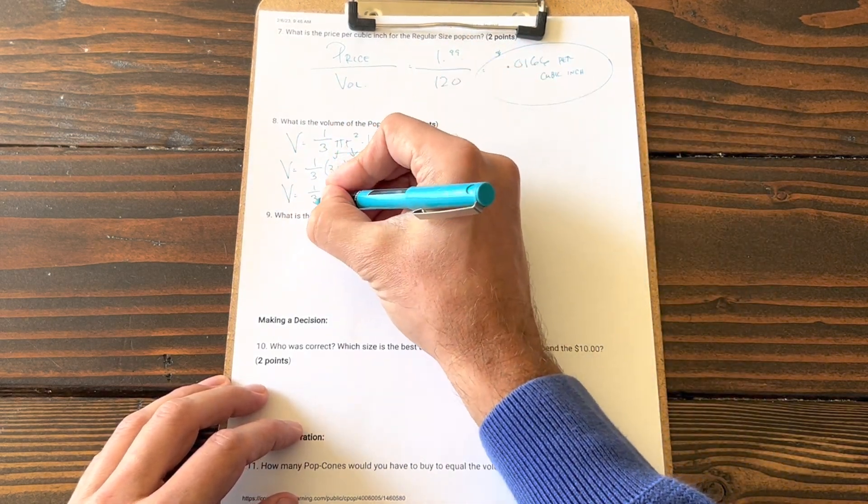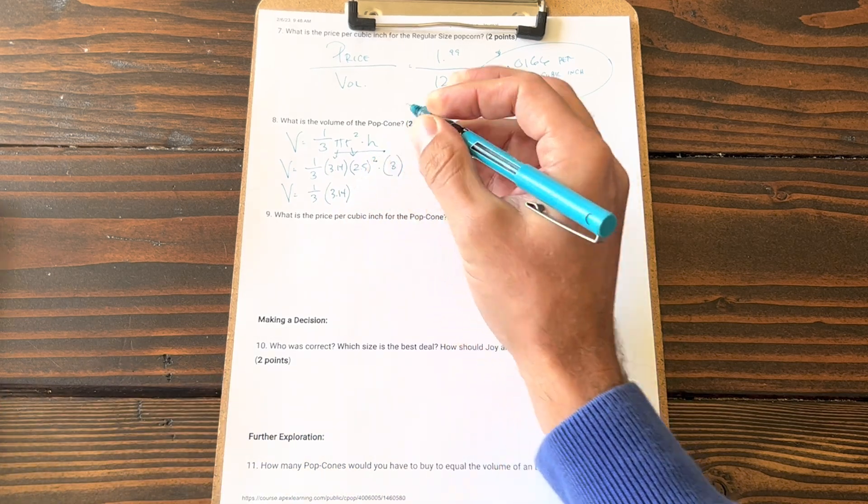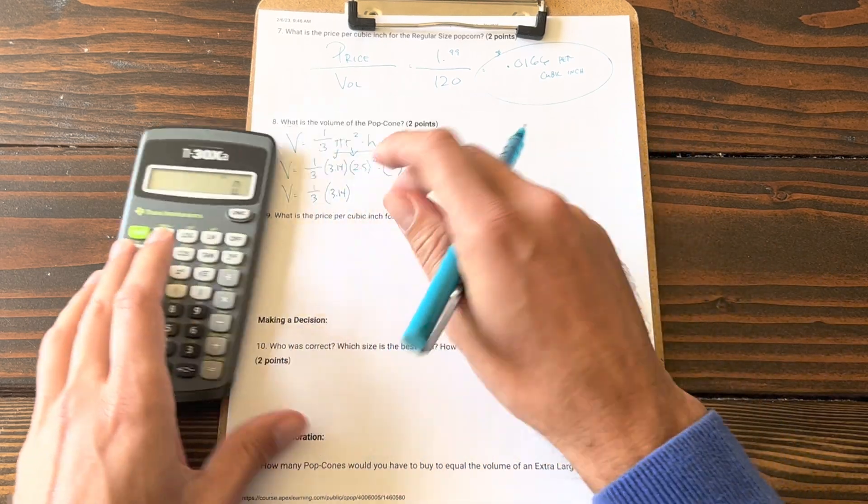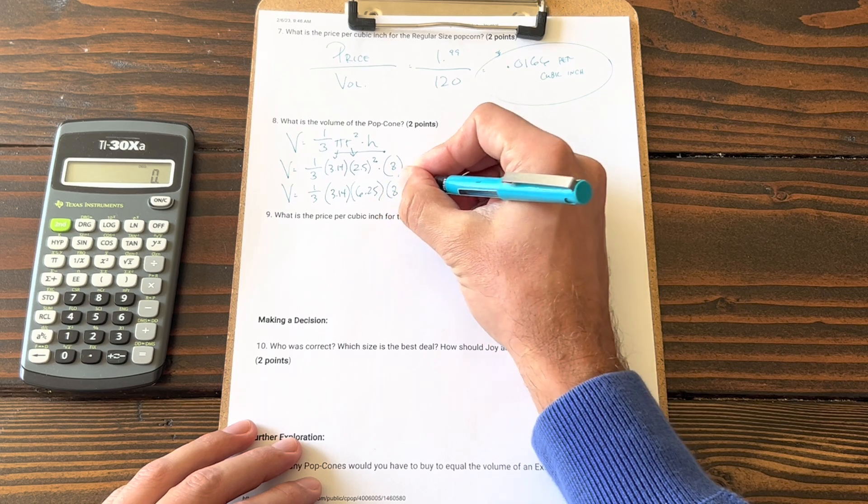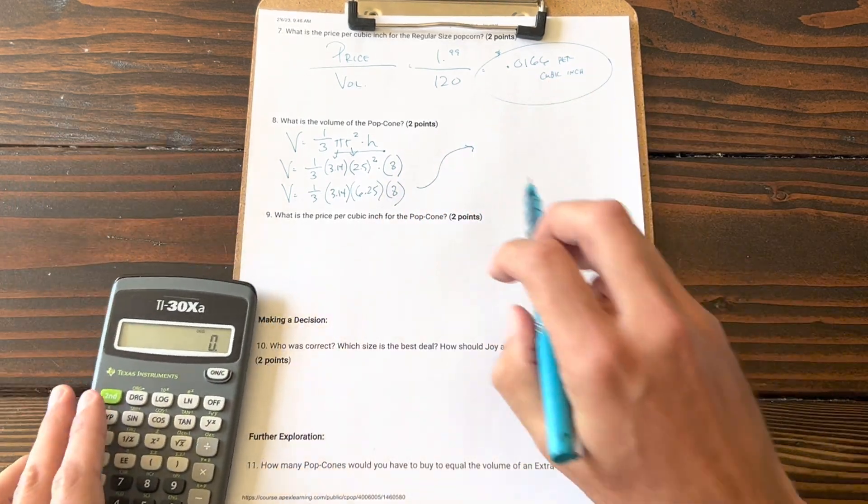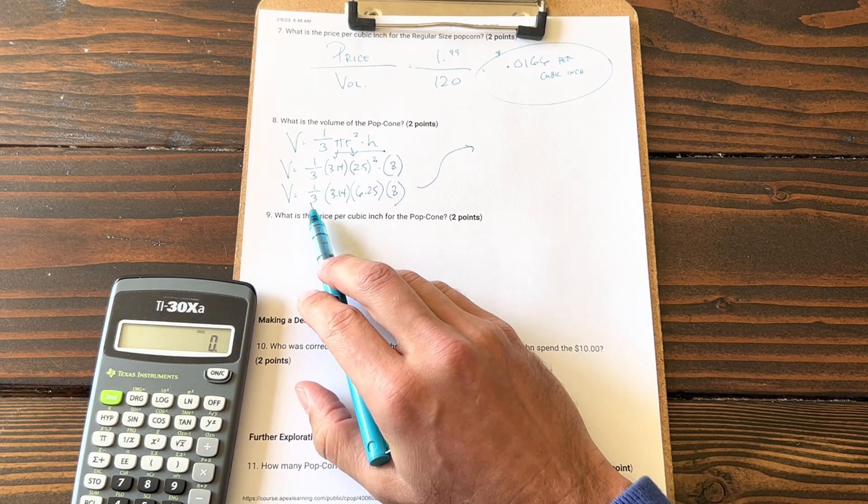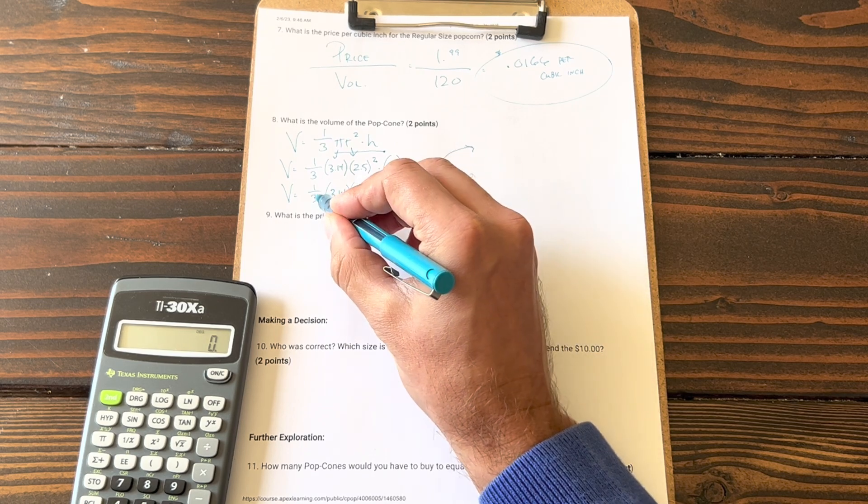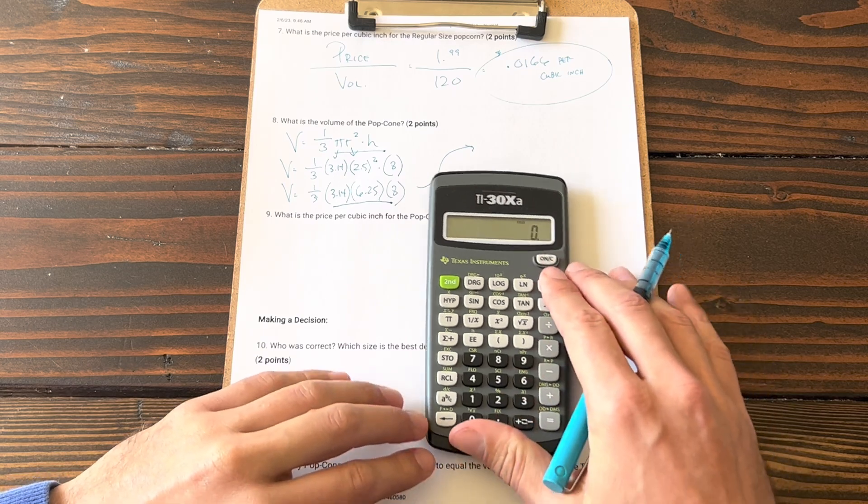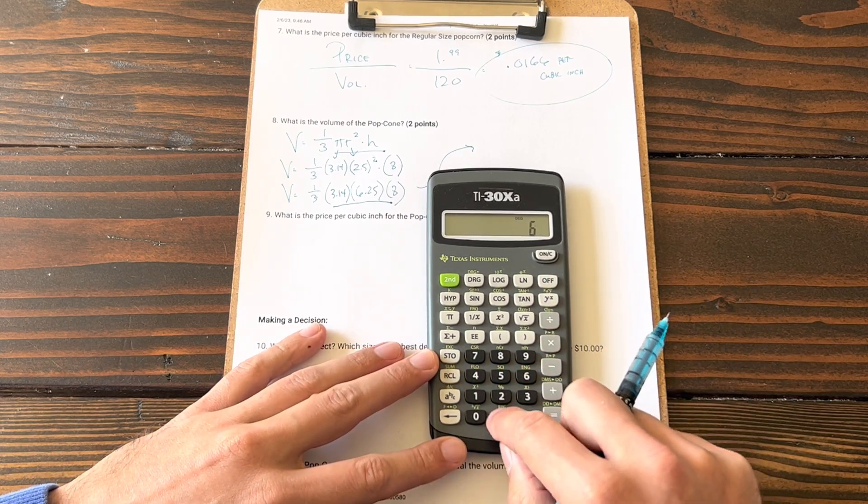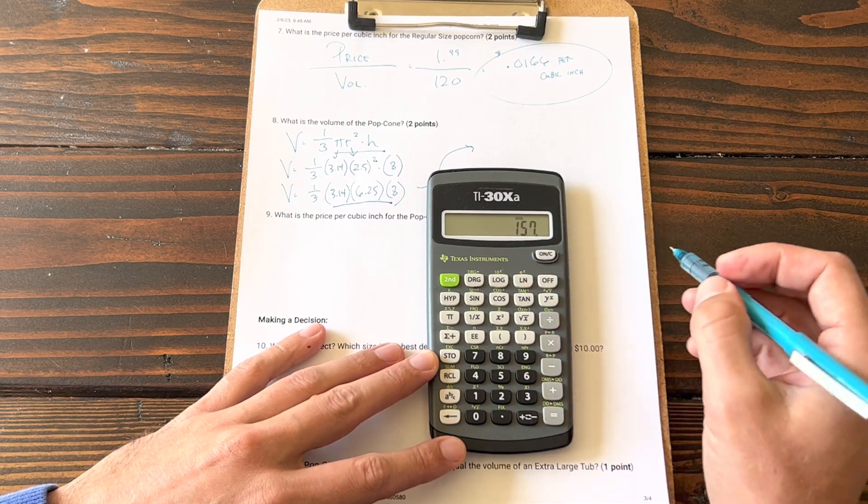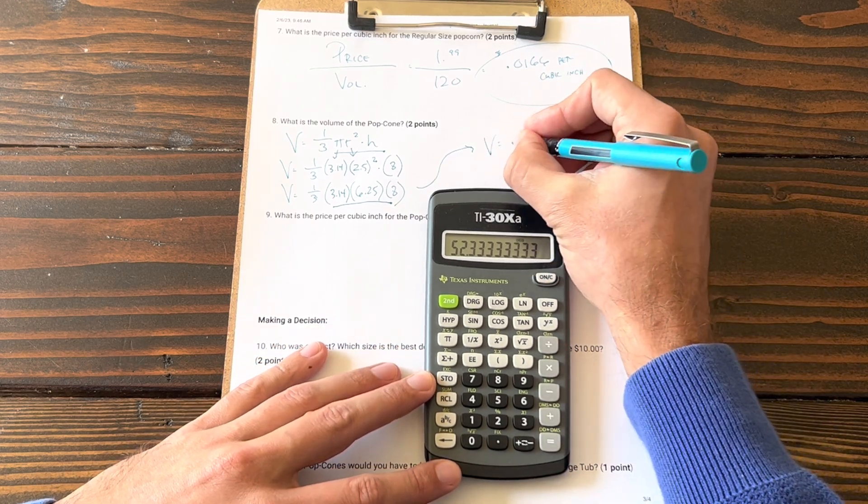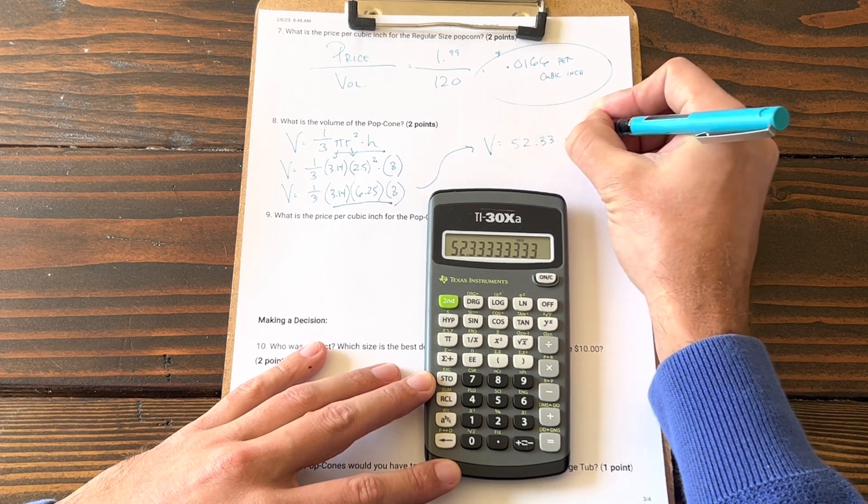Volume equals one-third, 3.14, 2.5 squared—recall that 5 times 2.5 times itself is 6.25—times 8. Let's go ahead and calculate this and see what we get. Multiplying by a third is the same as dividing by 3, so I'm going to multiply all of this and after I get my value I'll then divide it by 3. 3.14 multiply 6.25 times 8. Here's my value: 157. Now let's divide that by 3. The volume equals 52.33 inches cubed.